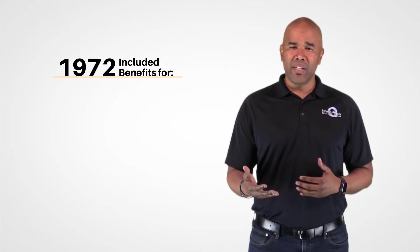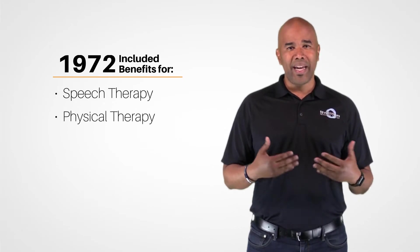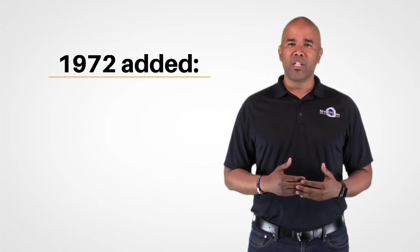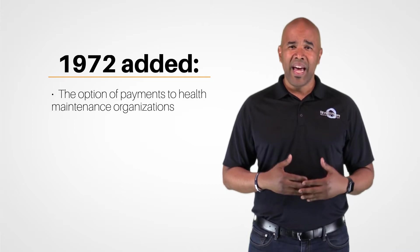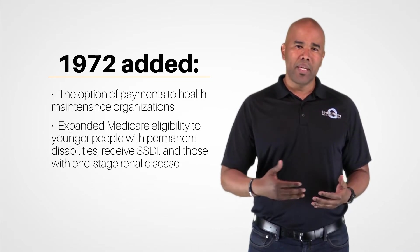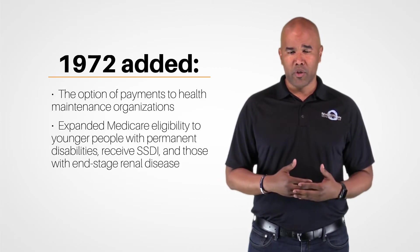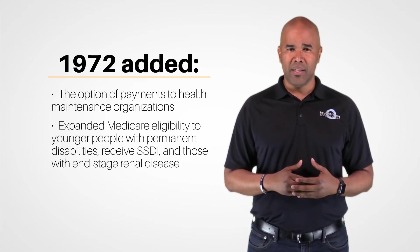Since 1965, the provisions of Medicare have expanded significantly. In 1972, changes were made to include benefits for speech, physical, and chiropractic therapies. During the same year, additional changes were made to add the option of payments to health maintenance organizations and to expand Medicare eligibility to younger people who have permanent disabilities and who receive Social Security Disability Insurance, or SSDI payments, and those who have end-stage renal disease.